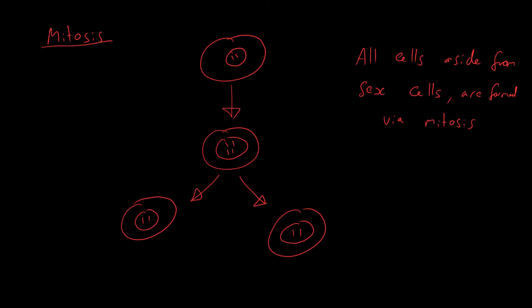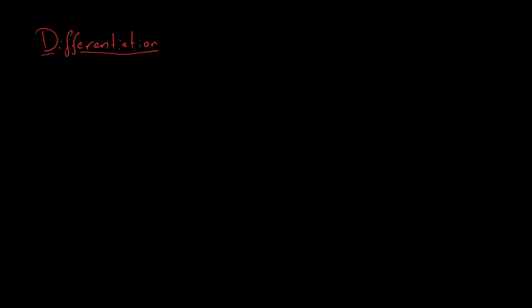You might now be wondering: if all cells divide by mitosis to form identical cells, why do we have different types — like neurons, skin cells, blood cells? They're clearly not identical to each other, but genetically they are. What happens is a process known as differentiation — and this is cell differentiation, which is very different from differentiation in maths. Differentiation is the process of unspecialized cells forming specialized cells.